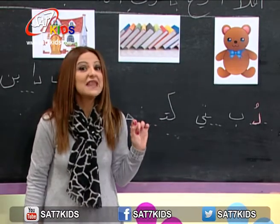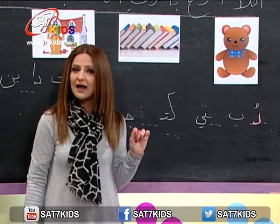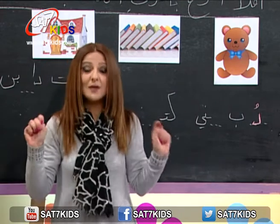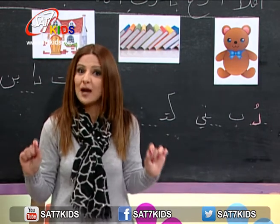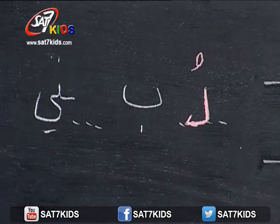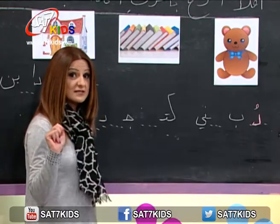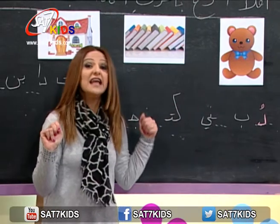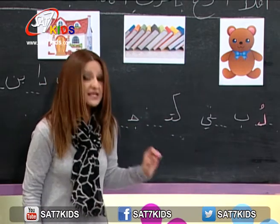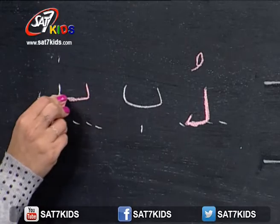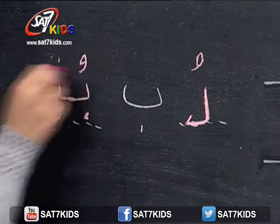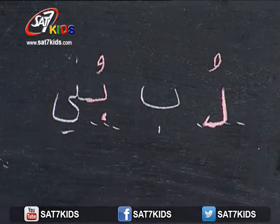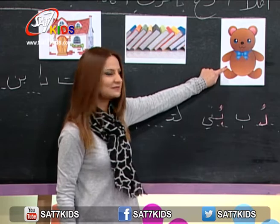نكمل: دب شو لونه؟ إلنا الدب لونه بني. ماذا نسمع في أول كلمة بني؟ أي حرف؟ صح، حرف الباء. وكيف منسمع هيدا الحرف؟ منسمعه مع صوت قصير. كمانة دمية بو: بني. ومنكتب حرف الباء بالكلمة بني. كيف بدي أكتبها؟ بأول الكلمة، حرف متصل من جهة واحدة. بكتب بني. بيكون عندي دب بني.